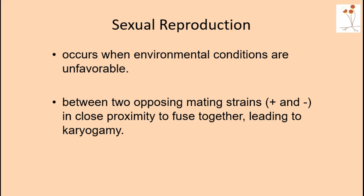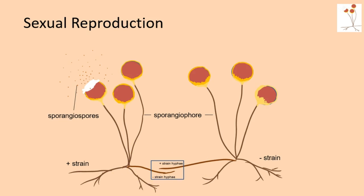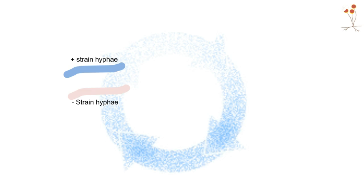Sexual reproduction only occurs when environmental conditions are not as good. There are going to be two opposing mating strains — we don't call them male or female; we call them plus or minus, and they have to be compatible. You can't have two plus strands mating or two minus strands mating. I'm showing you here the plus strand and the minus strand, with two hyphae coming in close proximity. When they come together, they secrete chemicals that allow them to sense each other, and they start forming what we call gametangia. These gametangia are extensions of the hyphae, and inside those gametangia will be a copy of a haploid nucleus.